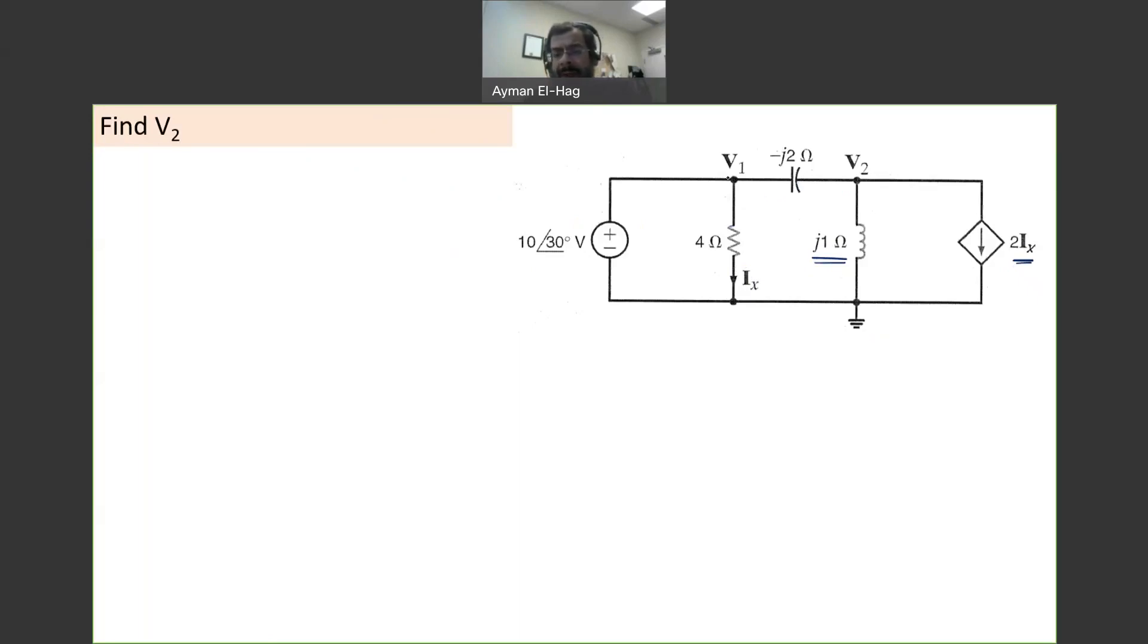When you look here carefully, it's very obvious that V1 is the voltage between this point and that point or across the 4 ohm, which is exactly equal to 10 angle of 30, the voltage supply. So this is my first equation. V1 is equal to 10∠30° volt.